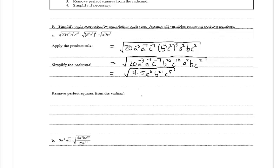Now we remove perfect squares from the radical. The square root of 4 gives 2 outside; 5 stays inside. For a to the 6th: 6 divided by 2 is 3 with no remainder, so a cubed comes out. For b to the 21st: 21 divided by 2 is 10 remainder 1, so b to the 10th comes out and one factor of b stays inside. For c to the 5th: 5 divided by 2 is 2 remainder 1, so c squared comes out and one factor of c stays inside. Everything remaining inside the radical is 5, one factor of b, and one factor of c.